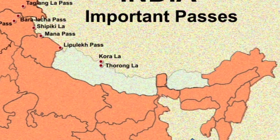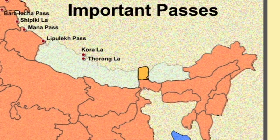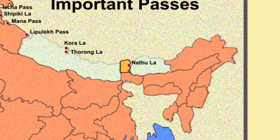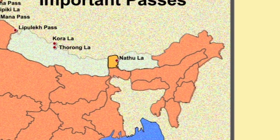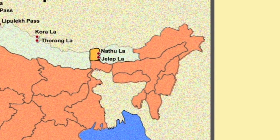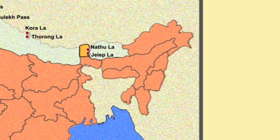Then we come to the state of Sikkim in India. Here two important passes: one is Nathula and the other is Jelep La. These are mountain passes in the Himalayas and they connect Sikkim with China's Tibet Autonomous Region. Jelep La Pass connects Lhasa to India.